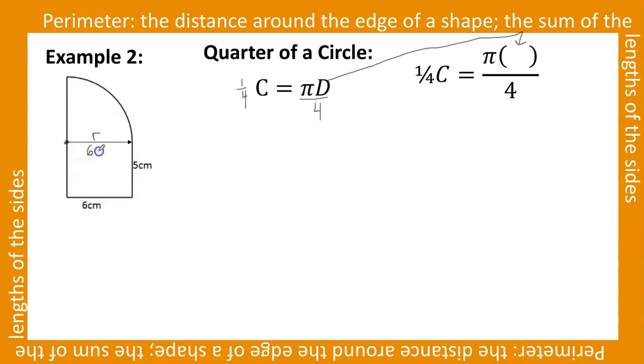Since they're both parallel lines, these two line segments are both 6 centimeters. So now that we know that the radius is 6 centimeters, we can figure out the diameter. The diameter is double the radius.